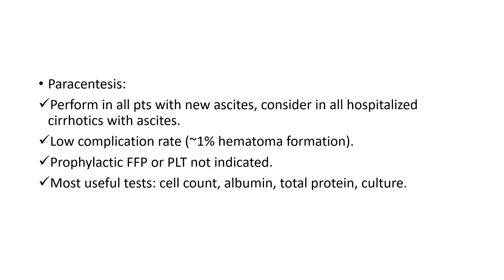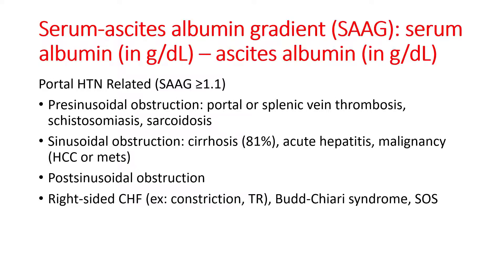Paracentesis, or sampling of the peritoneal fluid, is performed in all patients with new ascites and in those hospitalized due to cirrhosis with ascites. It has a low complication rate and prophylactic fresh frozen plasma or platelets are not needed. The most useful tests include cell count, albumin, total protein, and culture of the ascitic fluid.